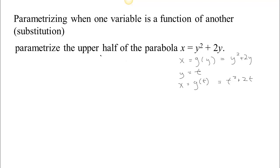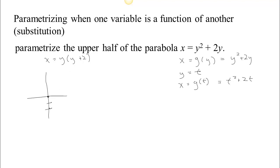The problem says to parameterize the upper half of the parabola, so let's look at a graph. Since x equals y squared plus 2y, factoring out a y gives x equals y times (y plus 2). That means when y is 0, x is 0, and when y is negative 2, x is also 0. So we have two points where the parabola crosses x equals 0.